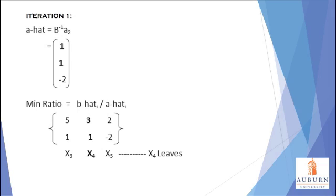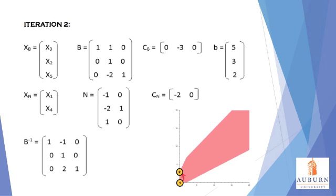Once the leaving and entering variables are decided, we need to adjust the matrices to reflect the changes. X2 has been put in the second row of the XB vector, while X4 has been placed in the second row of the XN vector. The second column of the B matrix has been replaced with the column vector in the A matrix associated with X2, which was previously the second column of the N matrix. The second columns of the CB and CN matrices were updated with the cost coefficients from X2 and X4 respectively.